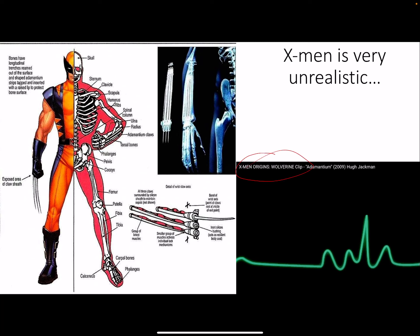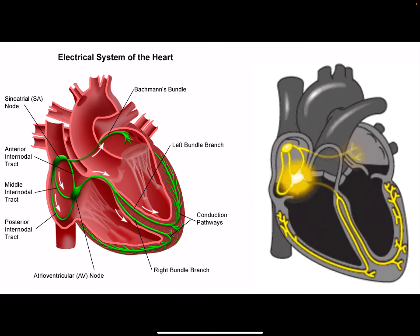I was watching X-Men Origins: Wolverine clips on YouTube, and I realized X-Men is very unrealistic — not because of the adamantium or the super healing, but because they tried to pass something off as an EKG in the movie. Hopefully by the end of this section you can tell why that EKG is absolutely ridiculous and laughable — one of the many reasons that movie tanked.